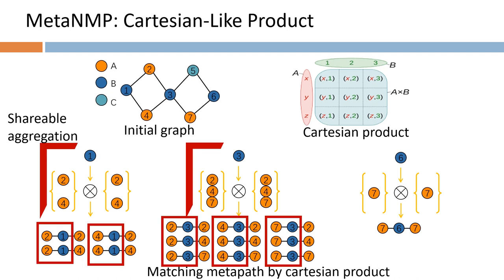At the same time, this Cartesian-like product paradigm can help us efficiently eliminate redundant computations. When generating metapath instances on the fly, common vertices among metapath instances are exposed directly. Hence, these metapath instances can share some vertex aggregations.